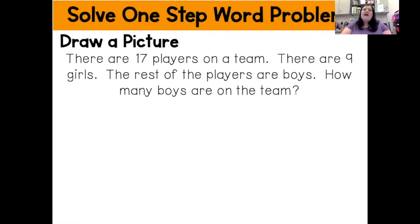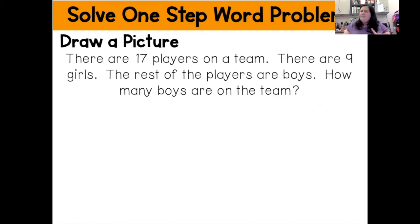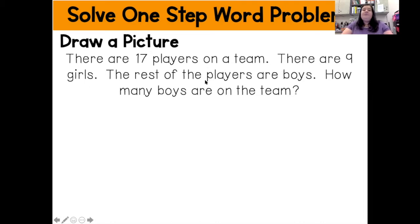The first strategy I'm going to use is draw a picture. Before I even draw my picture, I'm going to read my word problem at least one or two times. Then I'm going to use the cubes method to dissect my word problem to figure out exactly what I am going to be doing. The problem says: there are 17 players on a team. There are nine girls. The rest of the players are boys. How many boys are on the team?